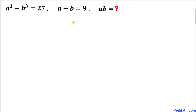Welcome to pre-math. In this video lesson we have got this system of equations: a cubed minus b cubed equals 27, and a minus b equals 9. Now we are going to find the value of a times b.